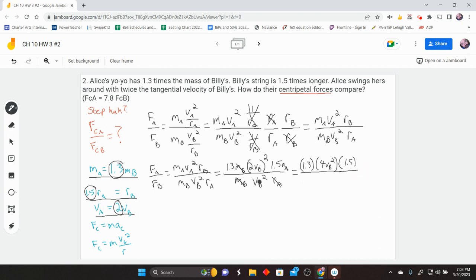And then on the bottom, all we had was V sub B squared. All right. At this point, I can cancel the V sub B squared and the V sub B squared. So on the top, I have 1.3 times 4 times 1.5. And that gives me 7.8.